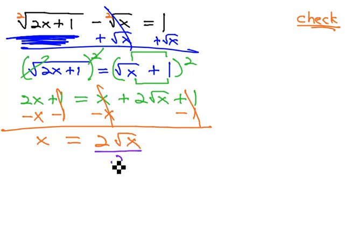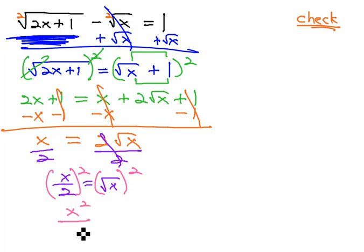Then, divide both sides by 2 to get the square root of x is equal to x over 2. Again, we can clear the square root by squaring both sides. x squared over 2 squared is 4, equals x.